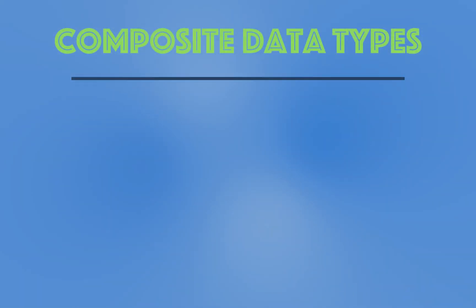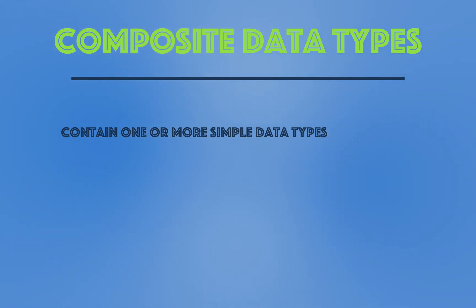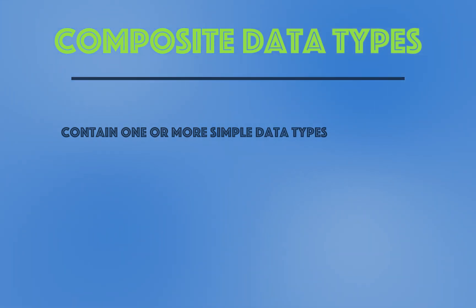Let's talk about composite or complex data types. Complex or composite data types are simply data types that contain one or more simple data types — the ones we talked about in the previous lecture. We've talked about simple data types like integers or strings, and now we're going to talk about complex data types that are composed of those simple data types.